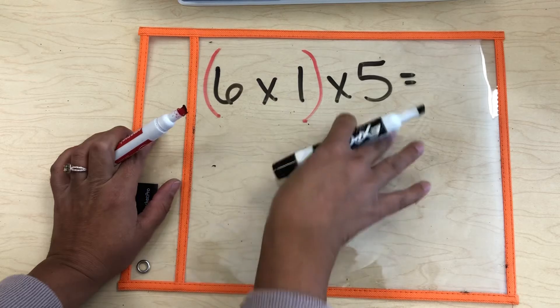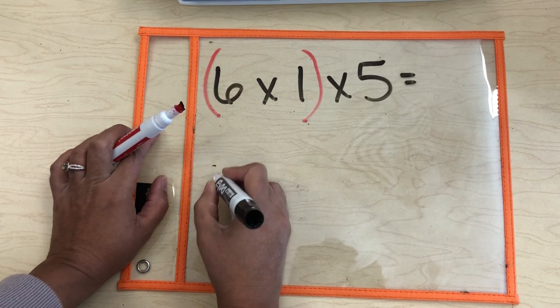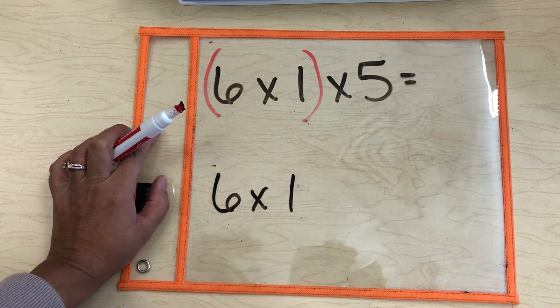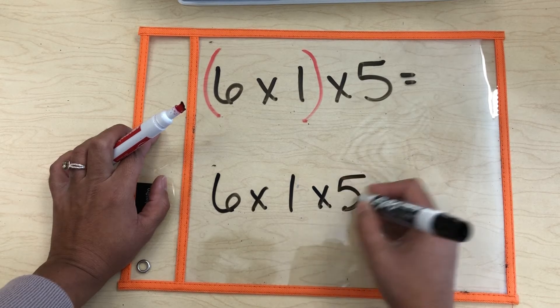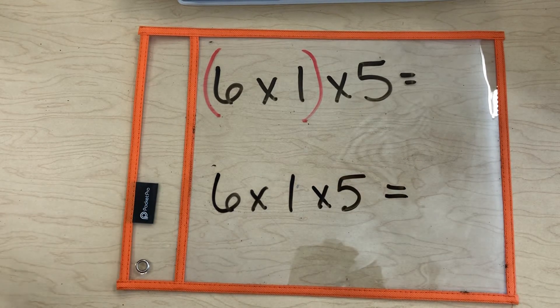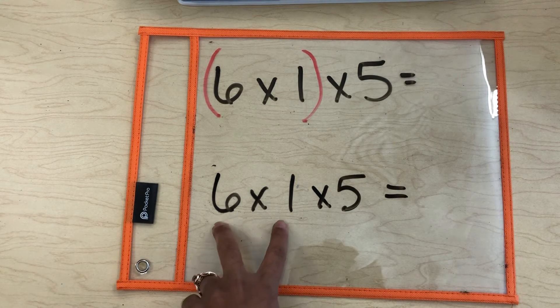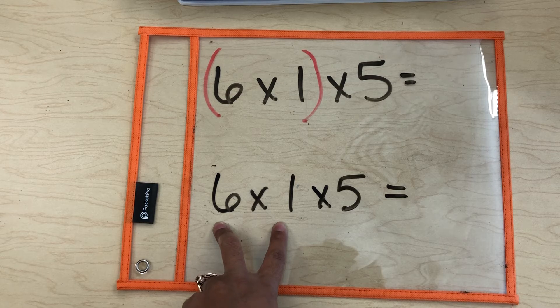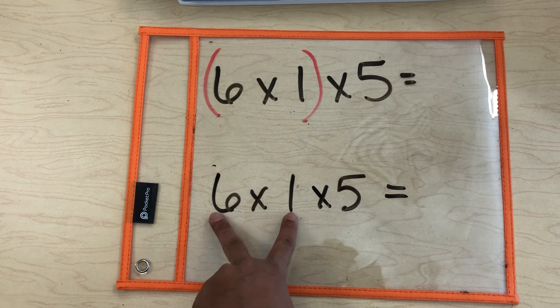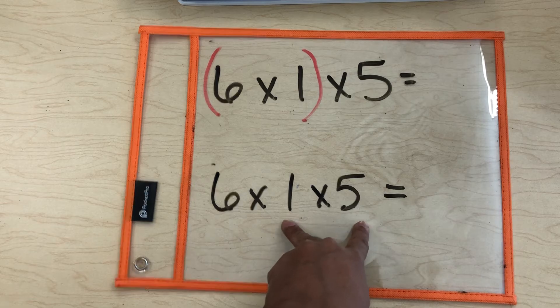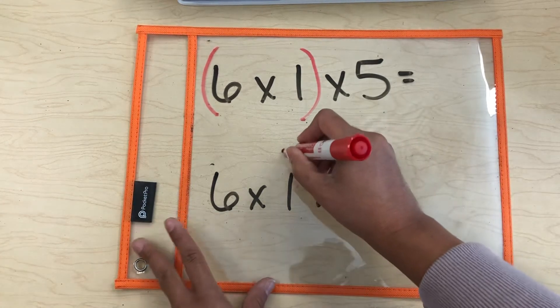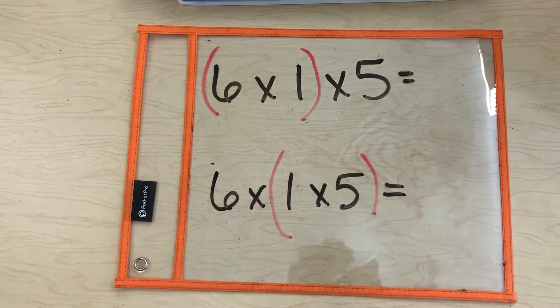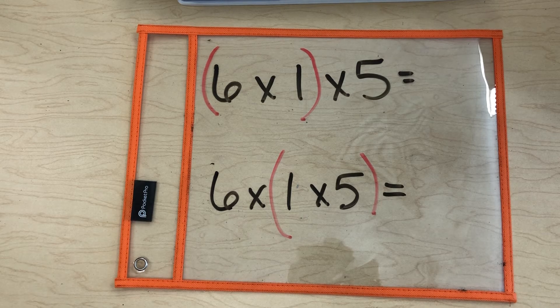We're going to simply rewrite without using the parentheses down here. 6 times 1 times 5 equals. And we're going to see where we can put the second set of parentheses. So we did 6 times 1 already. So we're going to move on over to that second set and put the parentheses around there. Now we are ready to solve.